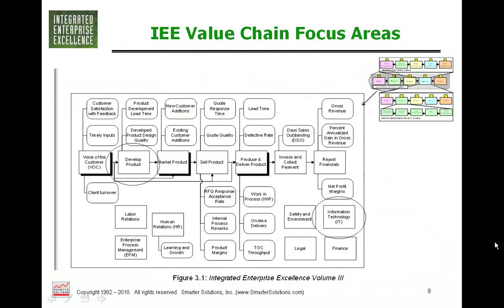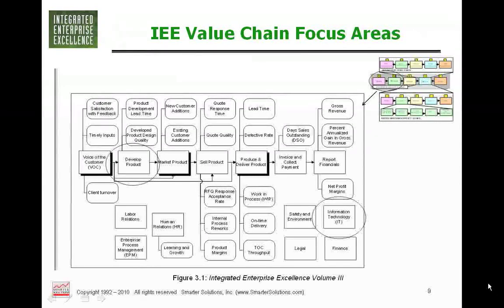If you look at how the development aspect fits within the overall value chain that most organizations have, it's circled there. After we get voice of the customer, we can develop product, market a product, sell product, produce, invoice, and report financials. The question is how do we apply Lean Six Sigma tools within the develop-product function? The other one circled is the IT group — how can we apply these techniques within information technology?